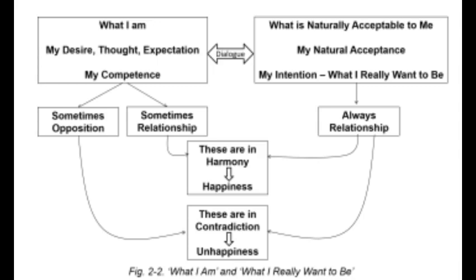Check if you are able to see and be aware of what you are. Similarly, check if you are aware of your natural acceptance. If you want to be aware of your own desires, thoughts, expectations, or your natural acceptance, where would you look? Of course, you have to look within. When you are able to see both these realities, you can find out if they are the same or different — whether they are in harmony or in contradiction.